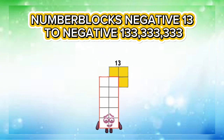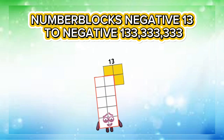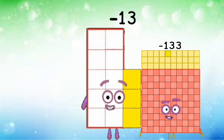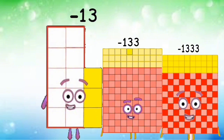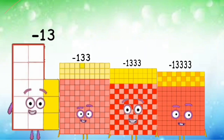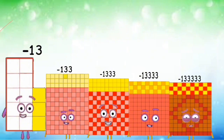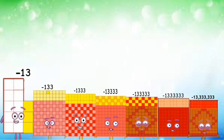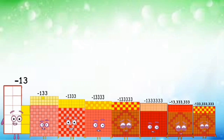Number blocks negative 13 to negative 13,333,333. Negative 13. Negative 1,333. Negative 13,333. Negative 133,333. Negative 1,333,333. Negative 13,333,333. Negative 133,333,333.